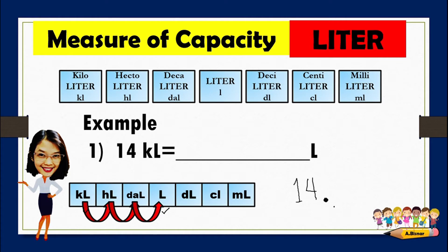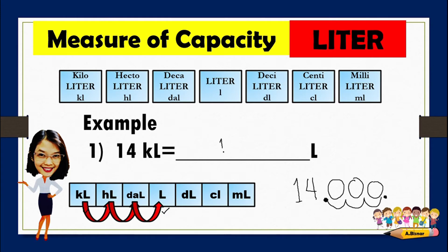Now we have to find out how many spaces from kiloliter to liter. Let us count: one, two, three — there are three movements to the right. Therefore, we will also move the decimal point three times to the right. Since there are no other numbers, we add zeros on those spaces. So 14 kiloliters is equivalent to 14,000 liters.